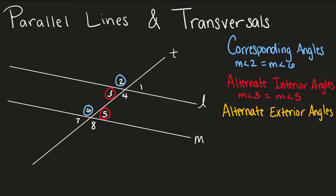Angle 1 and angle 7 are alternate exterior angles. These angles are on the exterior, or on the outside, of our parallel lines and they are on opposite sides of our transversal. Therefore, they are called alternate exterior angles, and alternate exterior angles are also congruent.